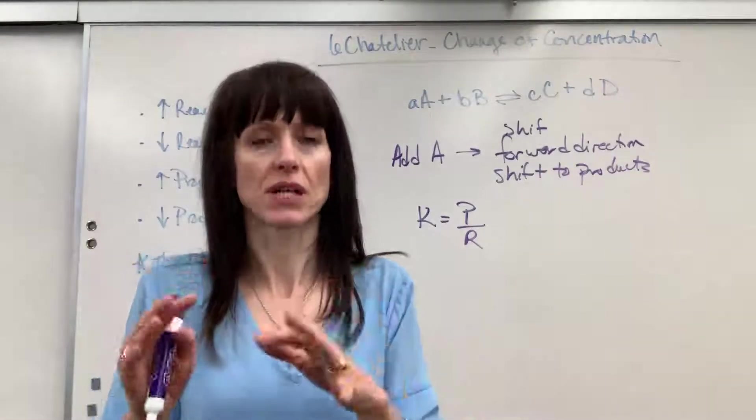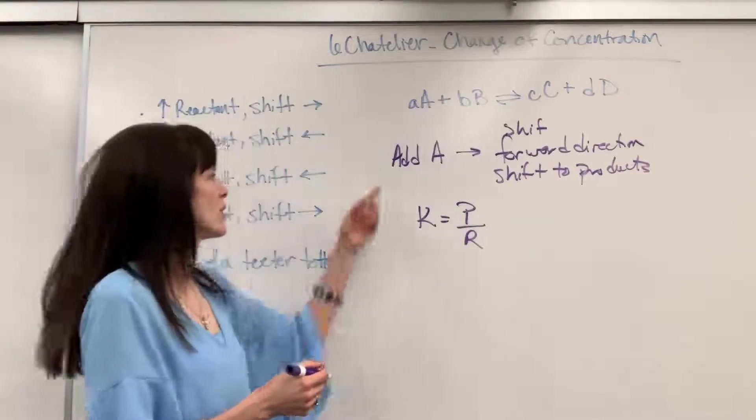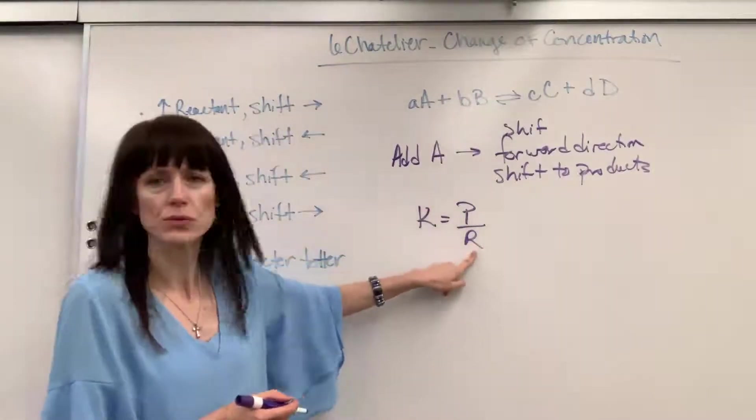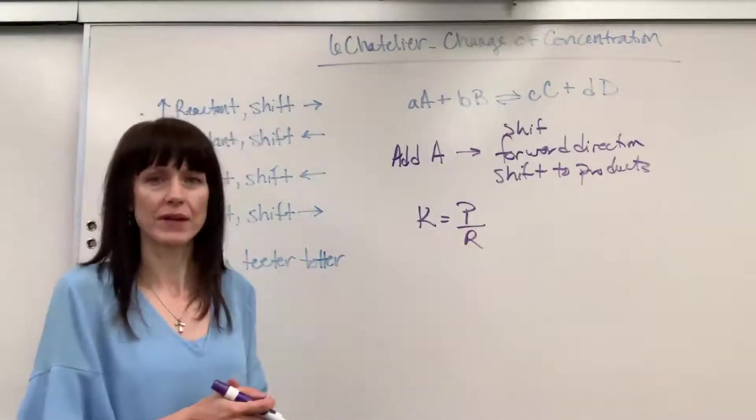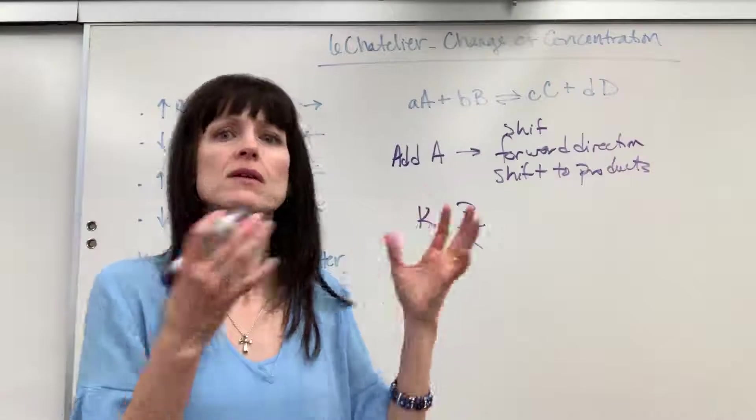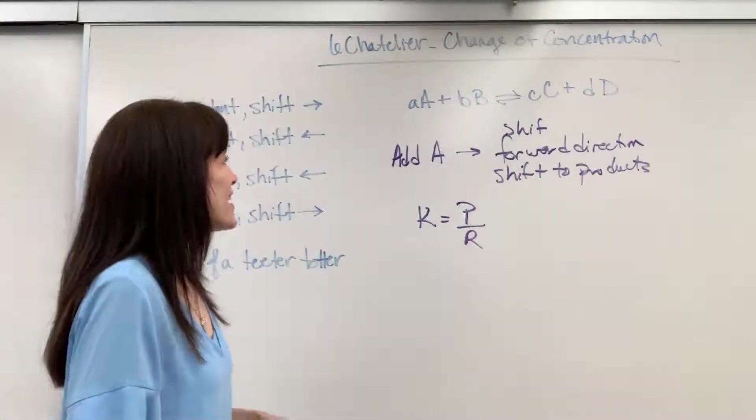Now temperature does change the value of K. But you can think about this mathematically, too. If I added A, too big of a denominator, it's going to have to consume reactants and then produce the products. So theoretically, mathematically, that's what's happening. I just happen to like my teeter-totter example.